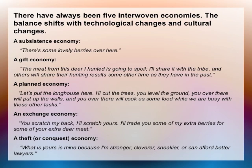There have always been five interwoven economies, and the balance between them shifts with technological and cultural changes: a subsistence economy, a gift economy, a planned economy, an exchange economy, and a theft or conquest economy. When someone says there are some lovely berries over here, they're talking about a subsistence economy. Sharing meat that's going to spoil is a gift economy. Planning a longhouse together is a planned economy. Bartering is an exchange economy. Taking things is a theft economy.